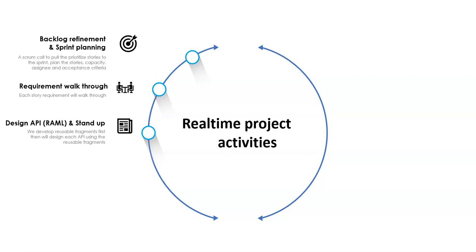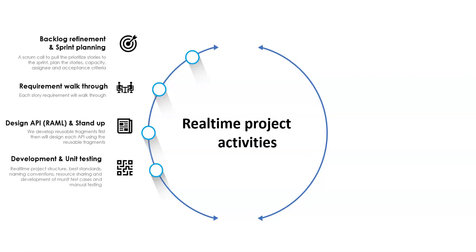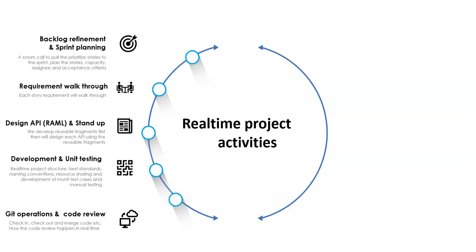Once designing of APIs using reusable fragments is done, the developer shall start with development. As part of development, the developer will do unit testing and also develop MUnit test cases. Once development and unit testing are completed, the developer commits code to the develop branch of the Git repo, then notifies the corresponding team lead to do the code review.